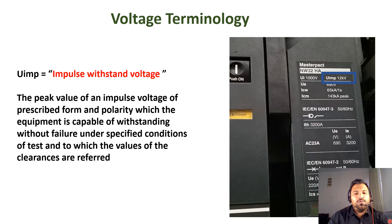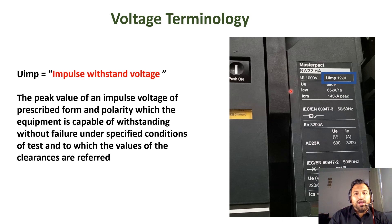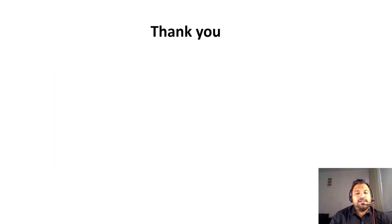To summarize, we studied three voltage parameters today: Ue — operational voltage; Ui — insulation voltage or creepage distance voltage; and Uimp — impulse withstand voltage. All three values can be found on the circuit breaker nameplate. I hope you understand these three terminologies. If you have any doubts regarding this topic, please type in the comment section. Thank you, good day, bye.